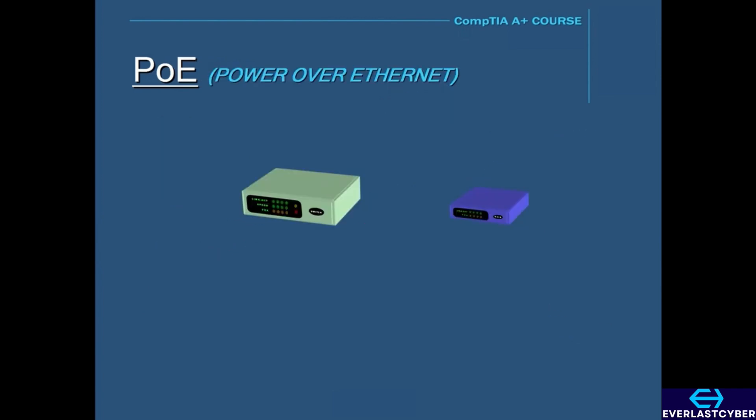Networking devices need electrical power to function, and that's why they have a separate electrical port for a power plug. But some networking devices don't have an electrical port. It is not that they don't need electrical power, it's just that they get their power and data from the same cable, which is through the Ethernet cable.